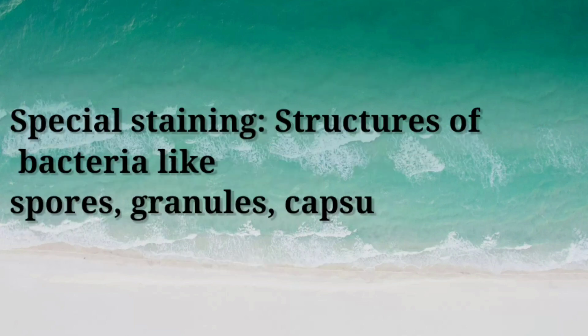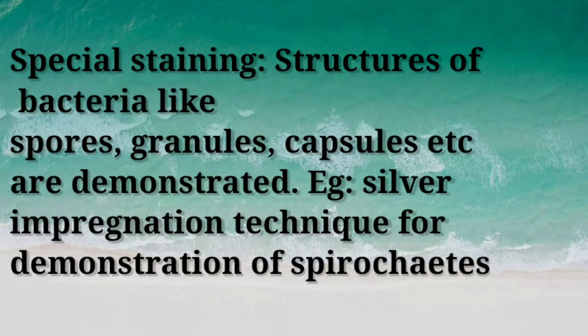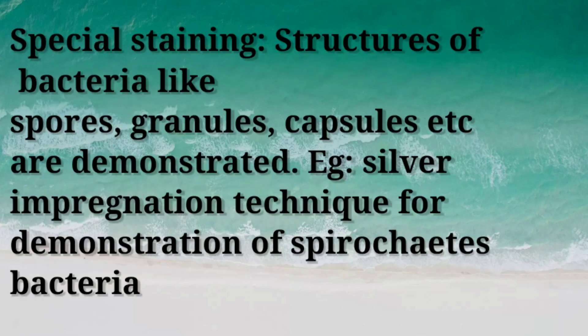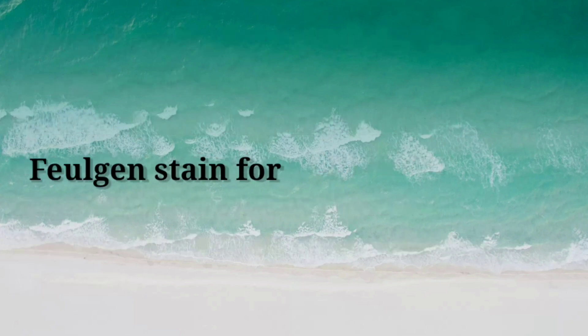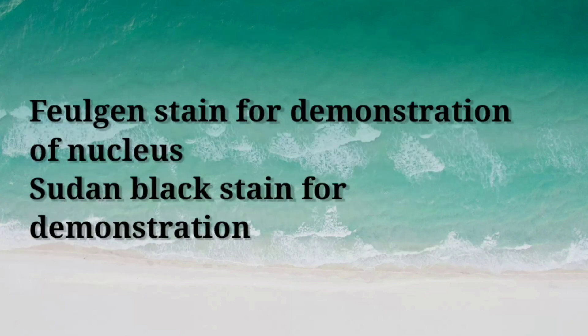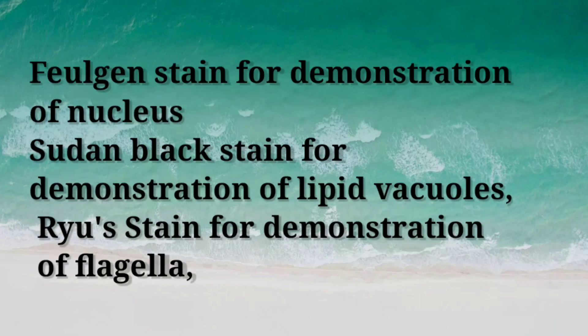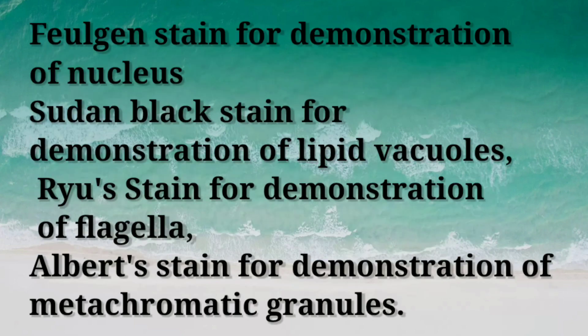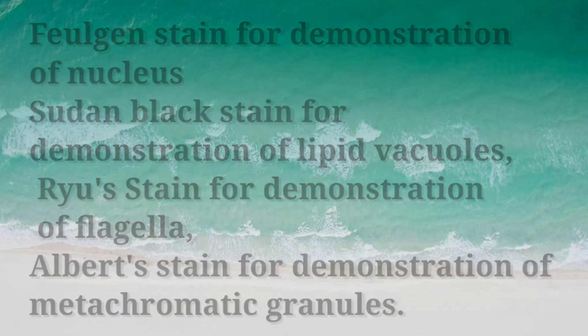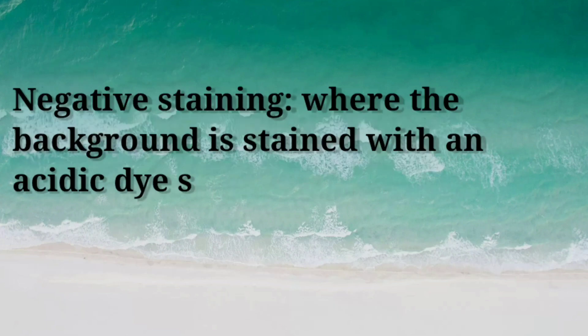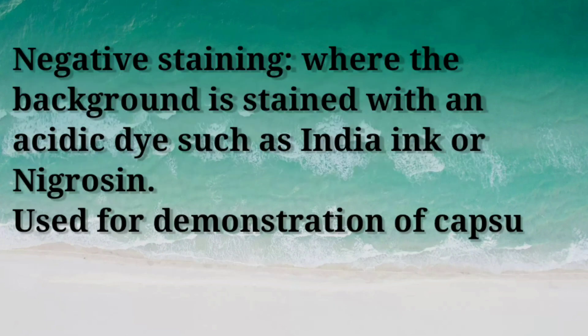Third, special staining — where structures of bacteria like spores, granules, and capsules are demonstrated. Examples: silver impregnation technique for spirochetes, Feulgen stain for nucleus, Sudan black stain for lipid vacuoles, and Rao's stain for metachromatic granules. Negative staining is where the background is stained with an acidic dye such as India ink or nigrosin, used for demonstration of capsules.